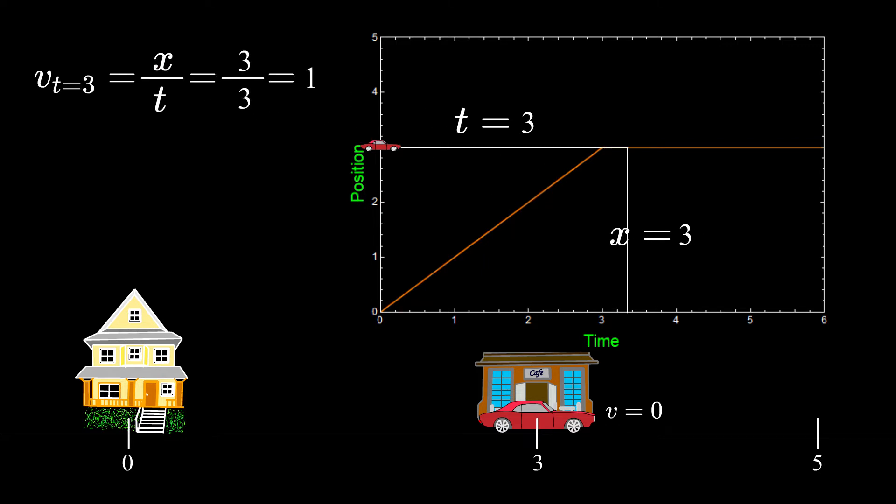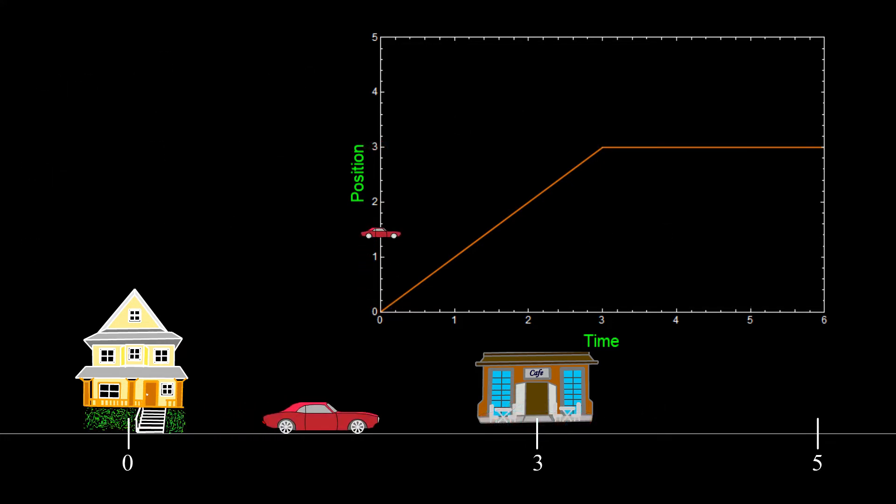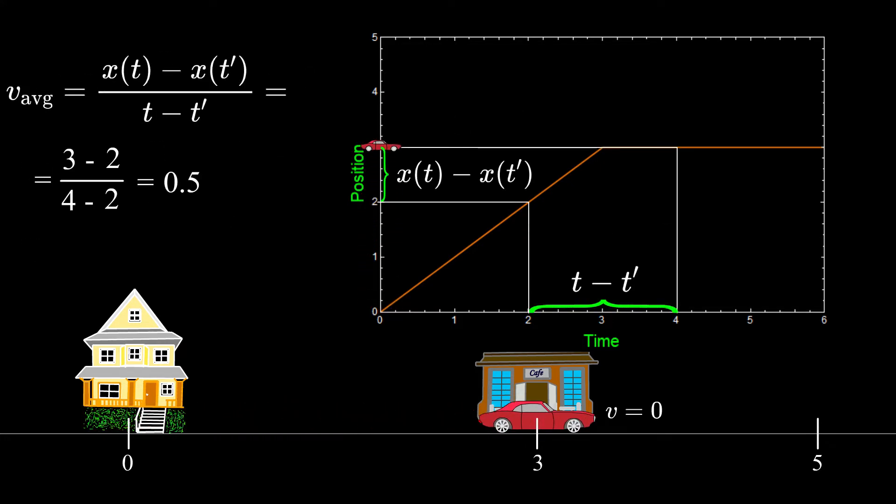If you try to calculate your velocity at different points, you would see that even though you are not moving, your calculation would give you something that is not zero. The more proper expression for velocity looks like this where we take the difference in distance interval compared to time interval.